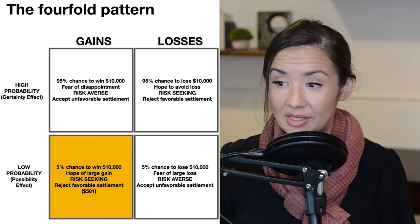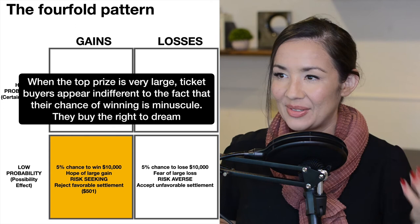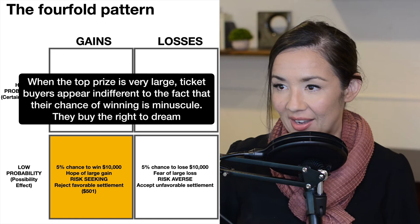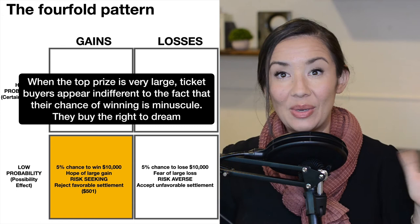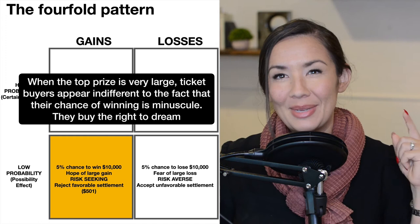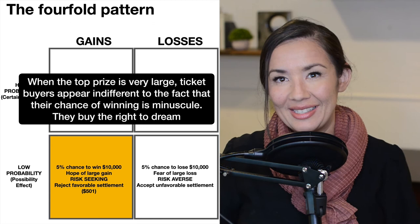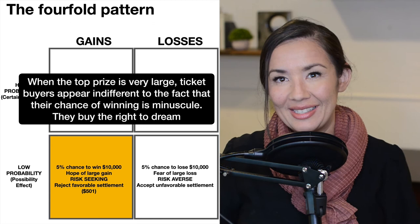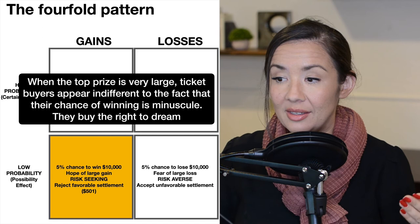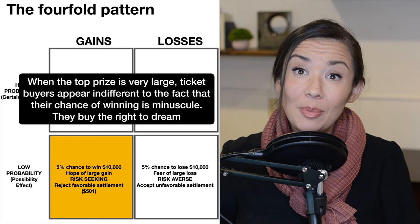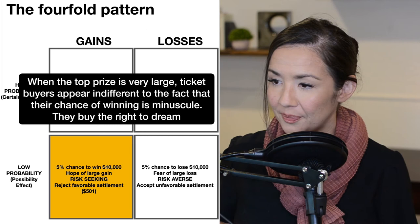In the low probability gain quadrant — a 5% chance to win $10,000 — we tend to be risk-seeking. When the top prize is large, ticket buyers appear indifferent to the minuscule odds. They buy the right to dream. For example, if you had a ticket giving you a 5% chance of winning $10,000 and I offered you $501 for it, most people wouldn't sell — even though $501 is $1 more than the expected outcome of $500. You'd keep it because you want the chance of winning $10,000.